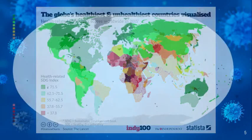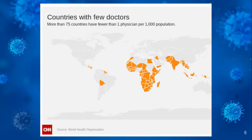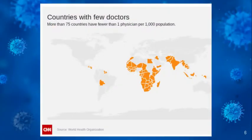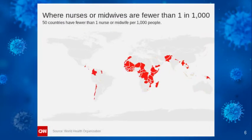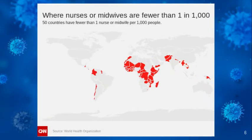You can see this correlation continue with global access to medical care. This map shows countries that have less than one doctor per 1,000 people. You can see the same trend from red to orange. Another map shows countries with less than one nurse or midwife per 1,000 people, and the red area is still in the same region. This shows a clear correspondence between accessibility to medical care and how long you're expected to live healthily.